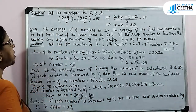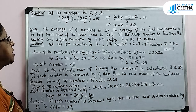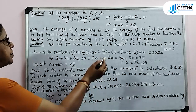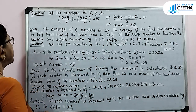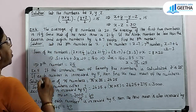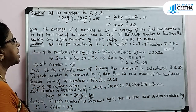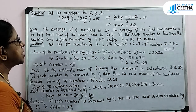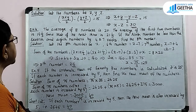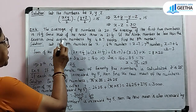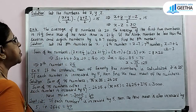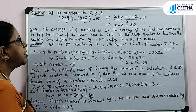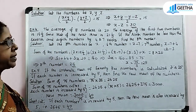Exercise number 4: The average of 8 numbers is 20. The average of the first 2 numbers is 15 and a half, and that of the next 3 is 21 and a third. If the 6th number is less than the 7th and 8th numbers by 4 and 7 respectively, find the 8th number.